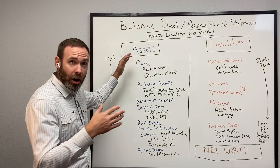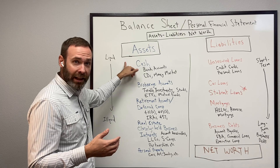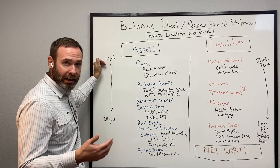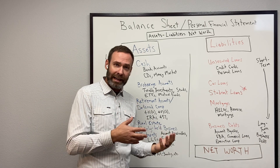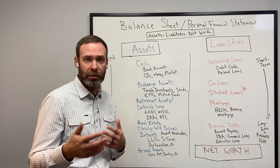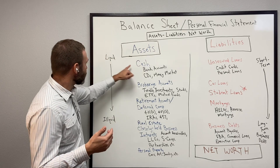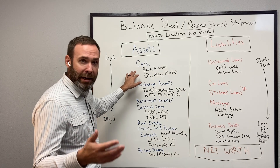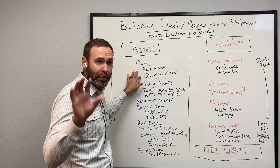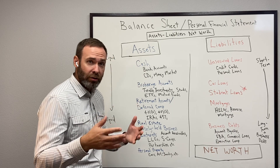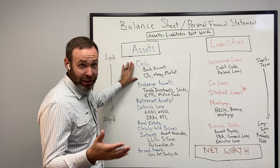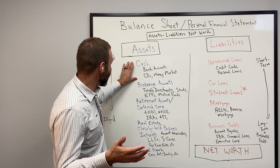You list all of your assets first on one side — on the left side of the page. You start with the liquid accounts, or accounts that are either already cash or can very easily be converted to spendable cash. These are going to be bank accounts, CDs, money markets — essentially anything you have at the bank or credit union qualifies for this first cash section.